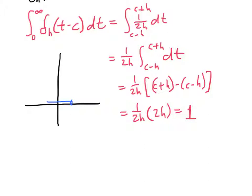So it's zero up to some point, and then it's greater than zero, and then it's zero again. So this height here on the y-axis is 1 over 2h. And this distance here turns out to be 2h.